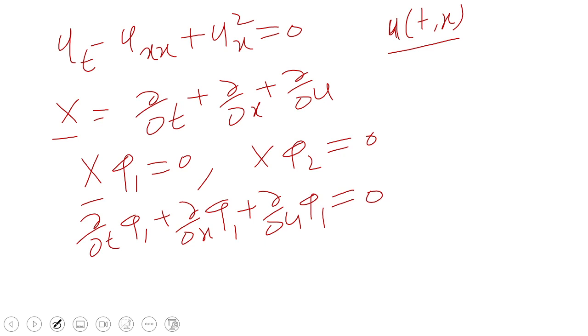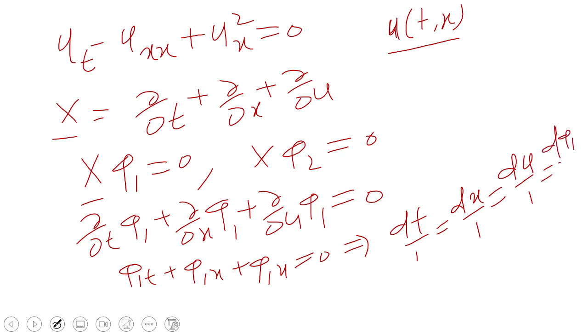That means pi 1 T plus pi 1 X plus pi 1 U is equal to zero. So the characteristic equation of this partial differential equation is DT ratio 1, DX ratio 1, DU ratio 1, and D pi 1 ratio 0.